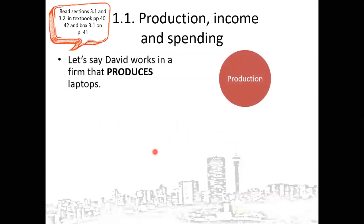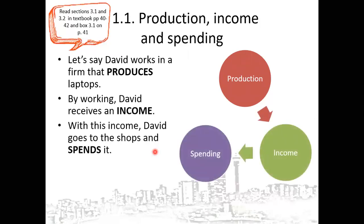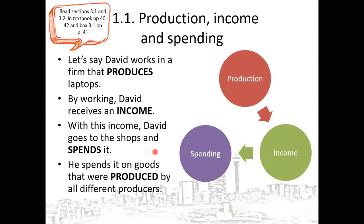The first objective: we have three methods of calculating GDP. The first method is the production approach, the second method is the income approach, and the third method is the spending approach, also known as the expenditure approach. When we calculate national income using these three approaches, we must attain the same value — if we attain 50 billion with the production approach, we must also have the same value with the expenditure approach.